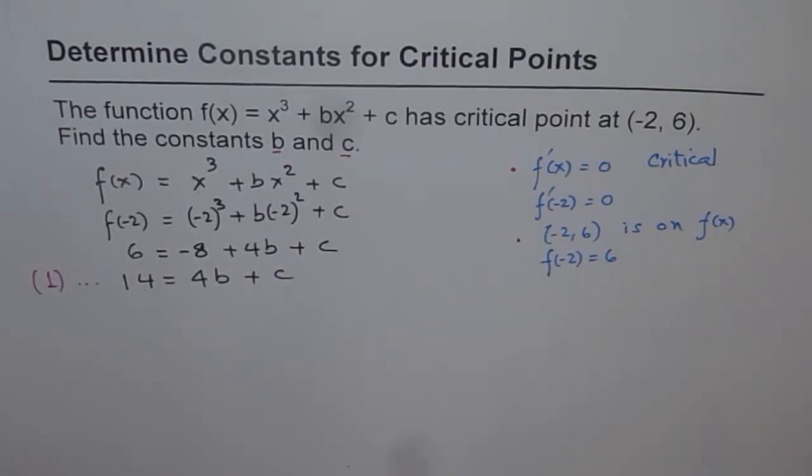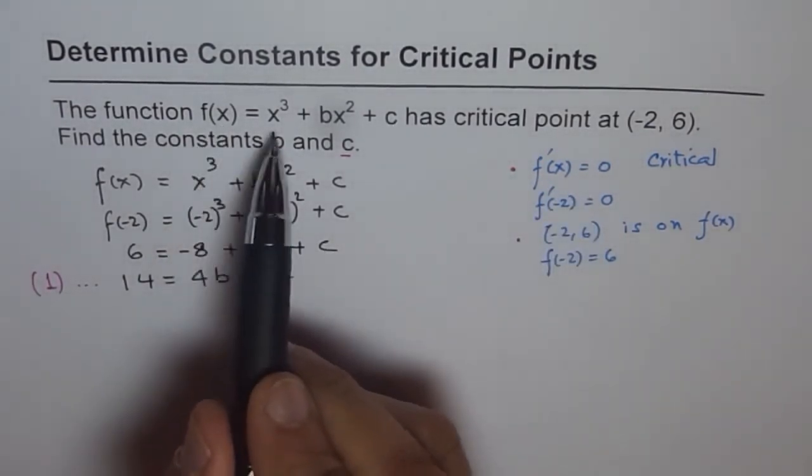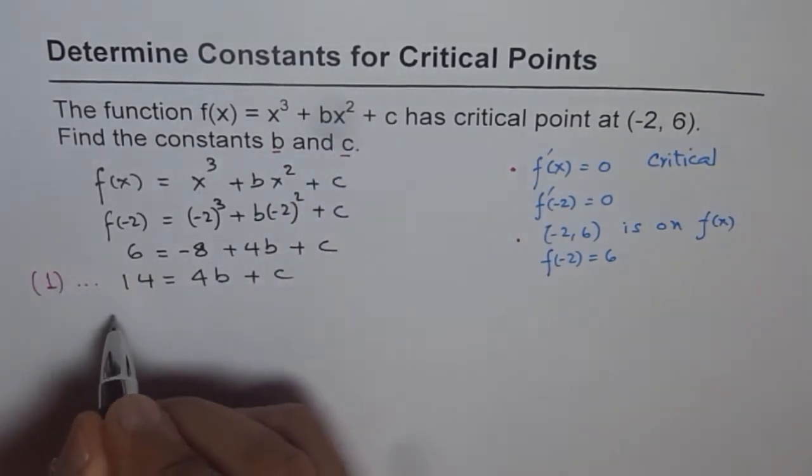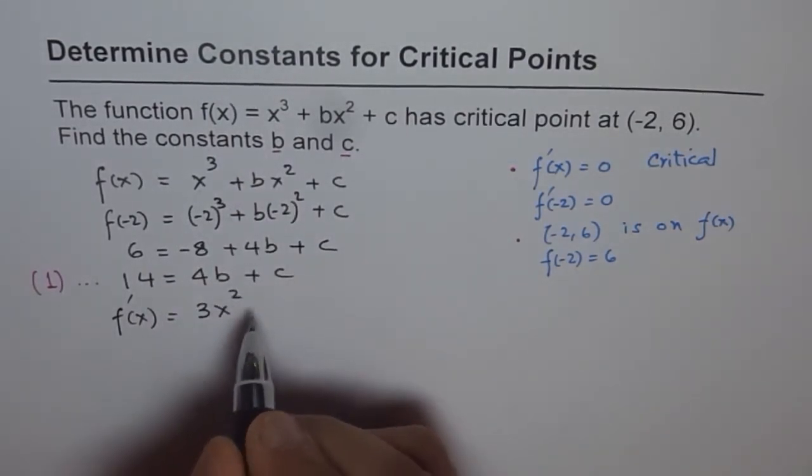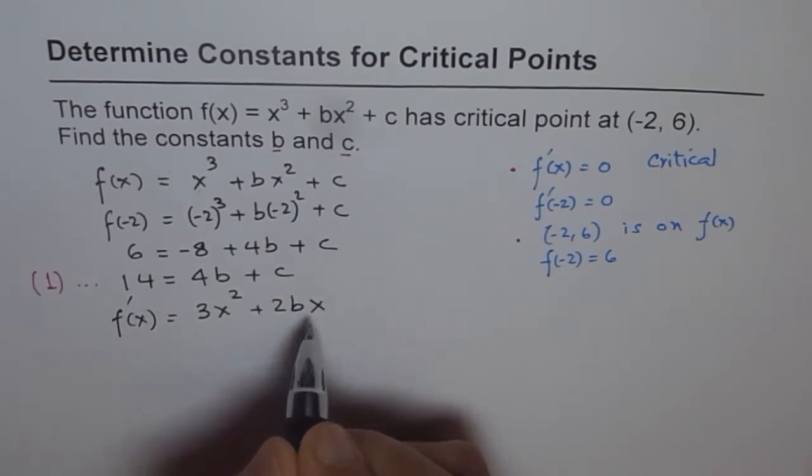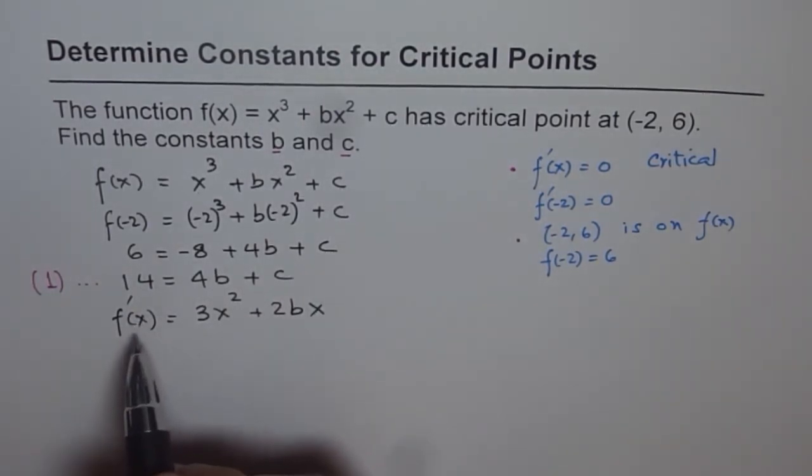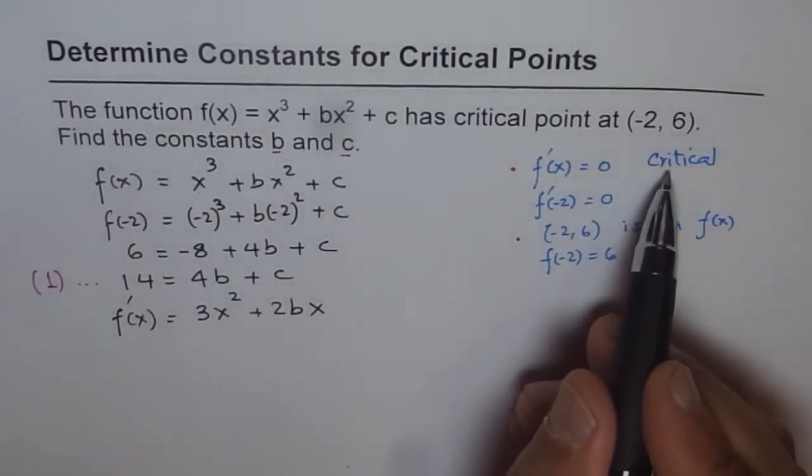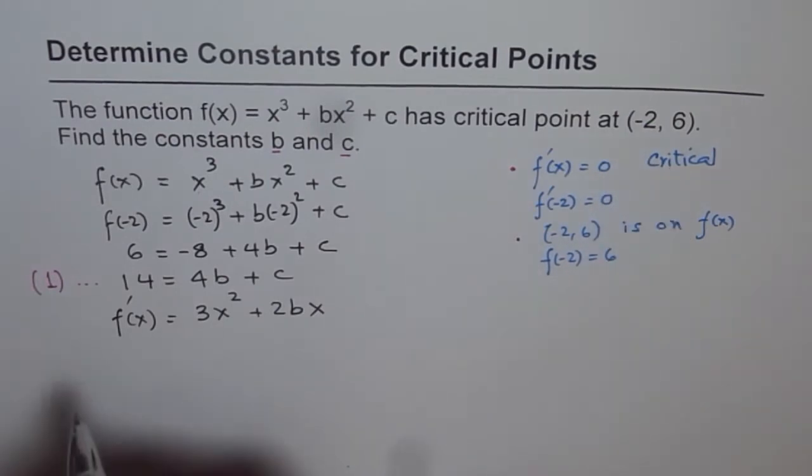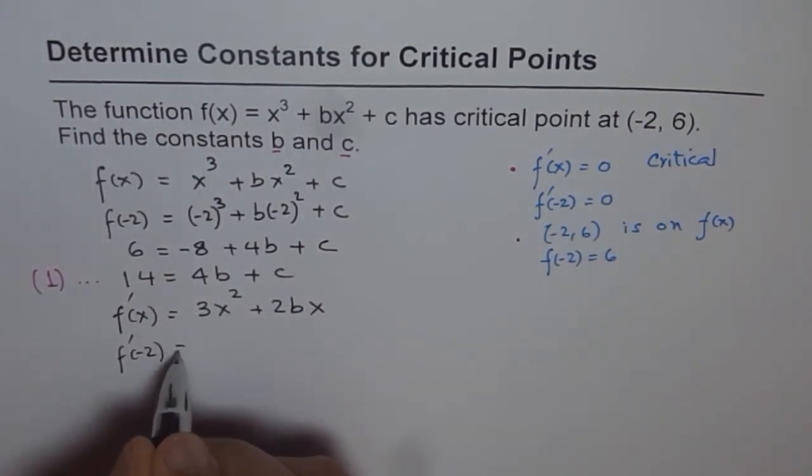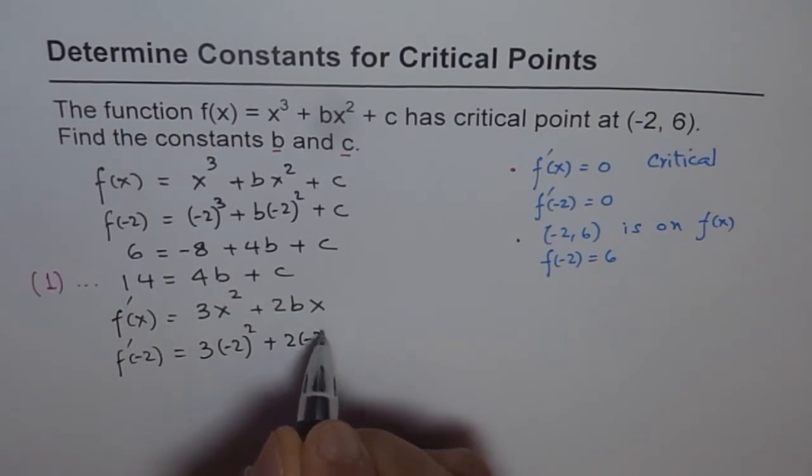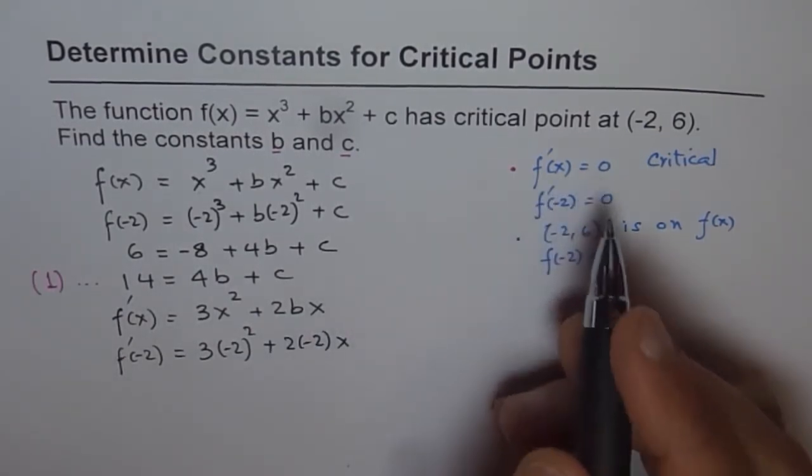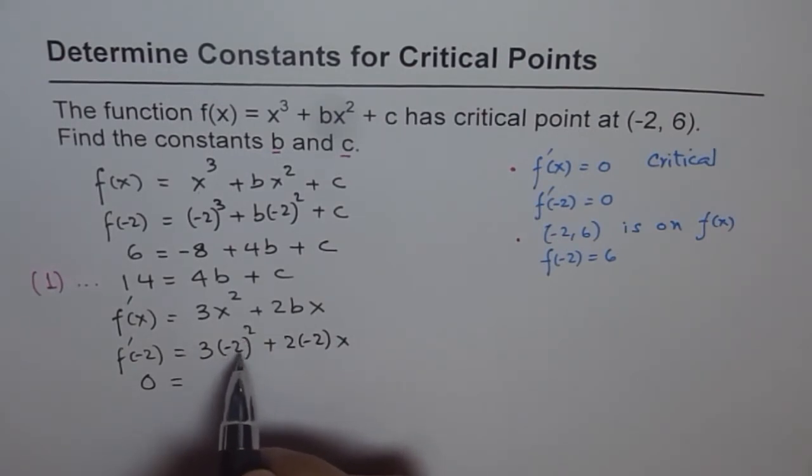Now second equation as I said, we can find by the first derivative. Now f(x) is x³ + bx² + c. So what is f'(x)? So f'(x) is equal to 3x² + 2bx and derivative of c is 0. So that is what we get. Now f'(x) should be 0 since we have a critical point at -2. So for -2 it should be 0. So what is f' at -2 equal to? So we will plug in -2 for x. So we get 3(-2)² + 2(-2)b. And f' at -2 is 0. So write 0 here equals to -2² is 4. 4 times 3 is 12. So 12 and then we have -4b.